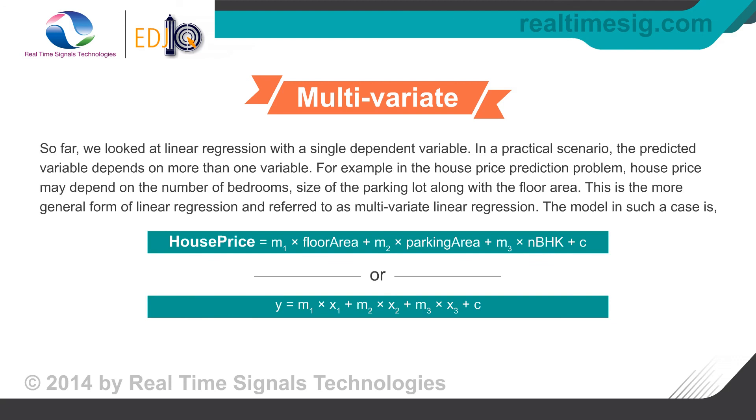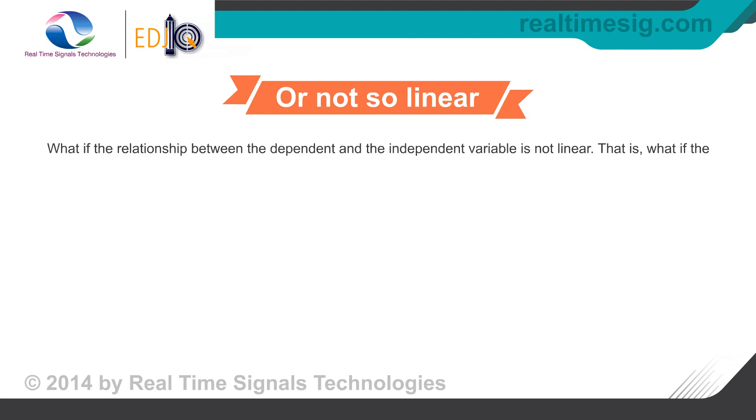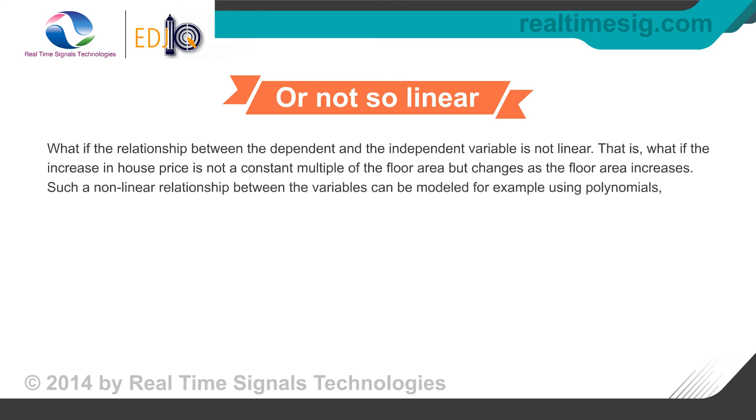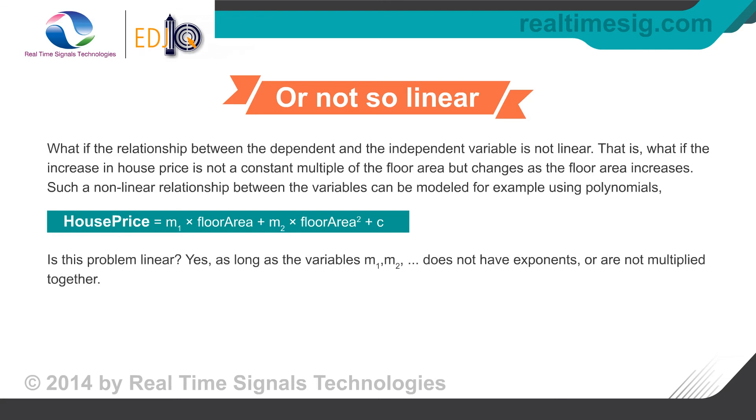What if the relationship between the dependent and the independent variable is not linear? That is, what if the increase in house price is not a constant multiple of the floor area but changes as the floor area increases? Such a non-linear relationship between the variables can be modeled for example using polynomials. House price equals m1 times floor area plus m2 times floor area squared plus c. Is this problem linear? Yes, as long as the variables m1, m2 does not have exponents or are not multiplied together.